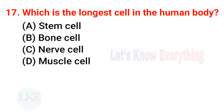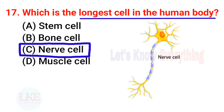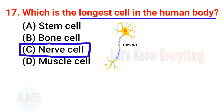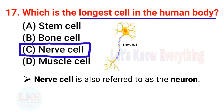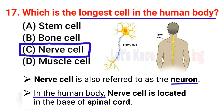Question number 17: which is the longest cell in the human body? Right answer, option C: nerve cell. The nerve cell is also referred to as the neuron, and in the human body, the nerve cell is located at the base of the spinal cord.